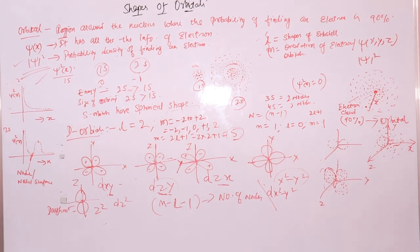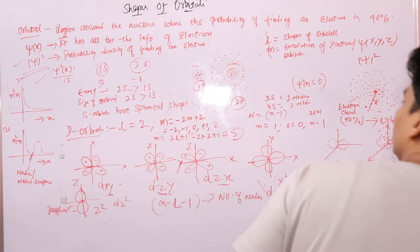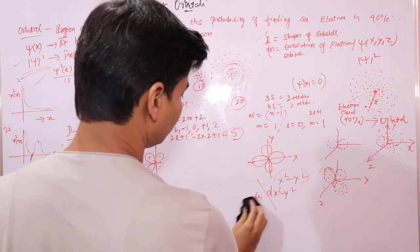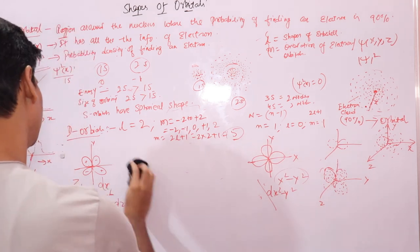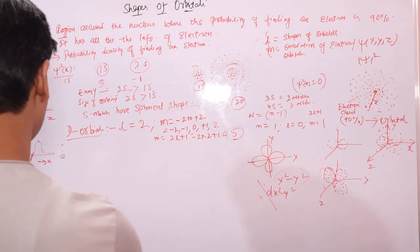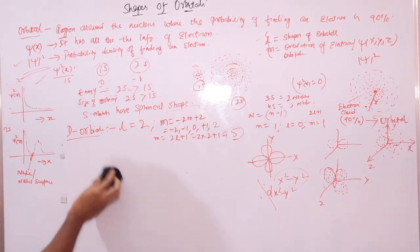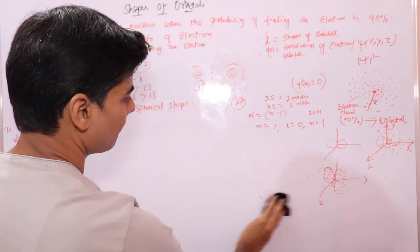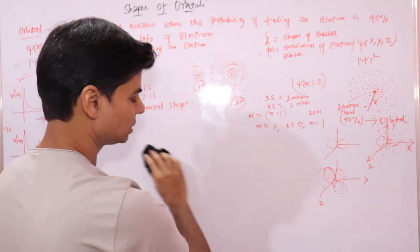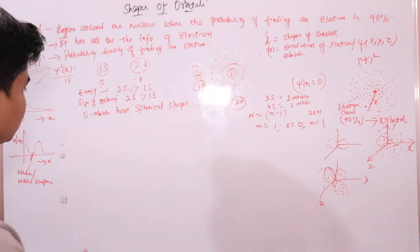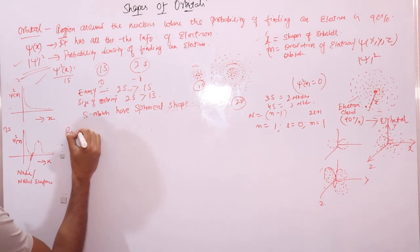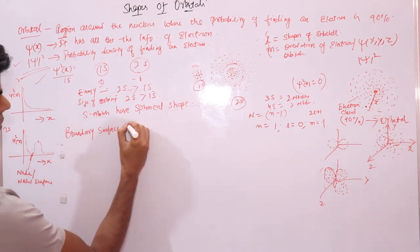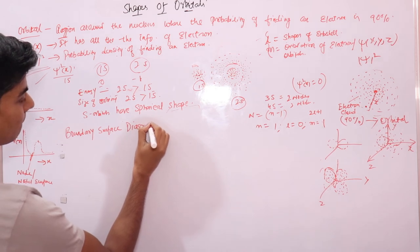One important concept: the probability of finding an electron in an orbital is 90%, not 100%. This leads us to the concept of boundary surface diagrams.